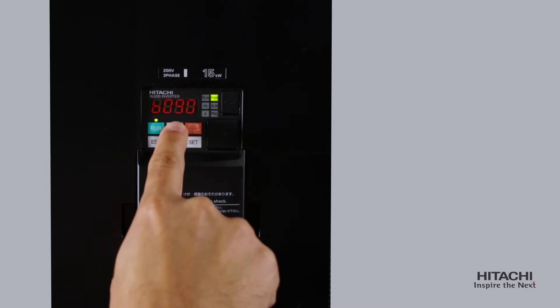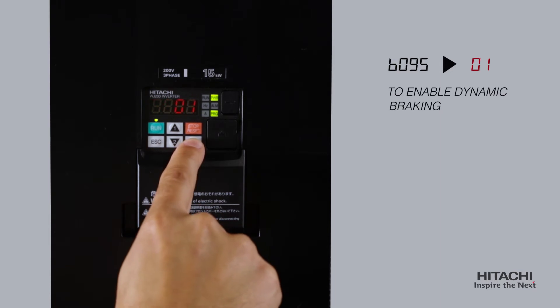Next, set B95 to 01 to enable dynamic braking while in operation.